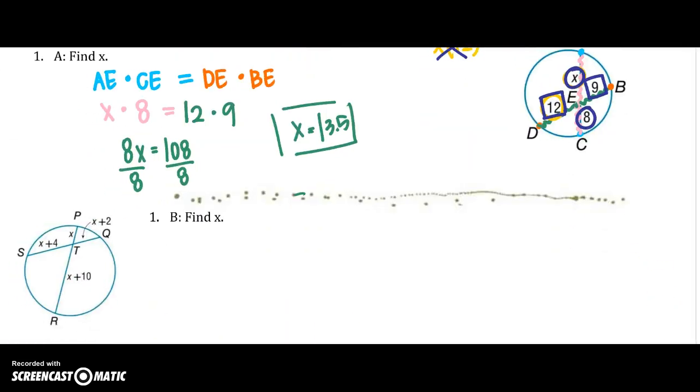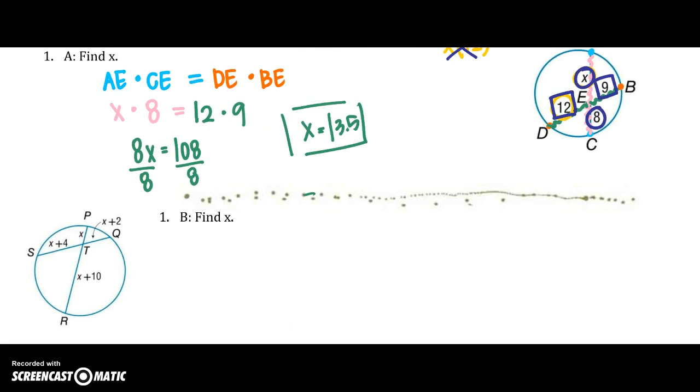Alright, let's try one more, and a little bit more complex. So we know we're going to stick with our individual chords. So we would say PT times TR. That is going to equal ST times TQ. Alright, so sticking with that, I'm going to say X times, I'm going to put in parentheses, X plus 10. That is going to equal X plus 4 times X plus 2.